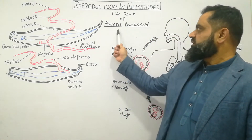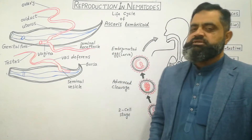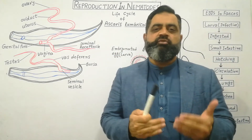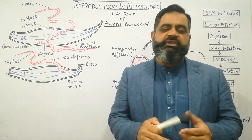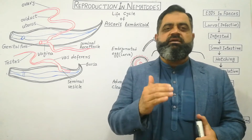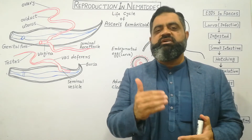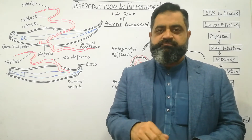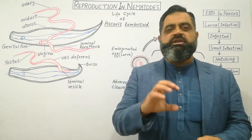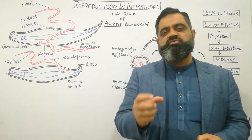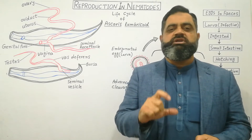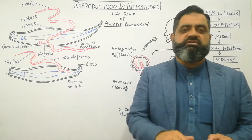Ascaris lumbricoides is basically dimorphic. It means that male and female have different body forms. The female is larger while the male body is shorter than the female.